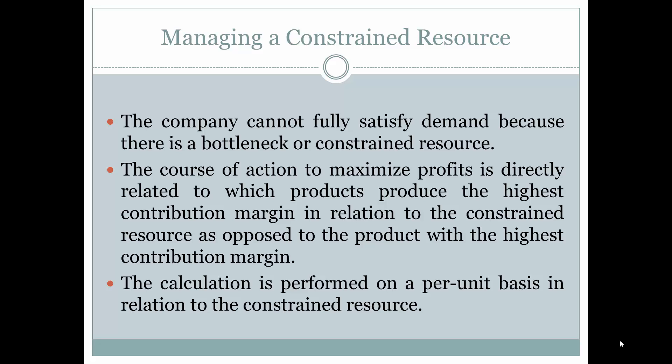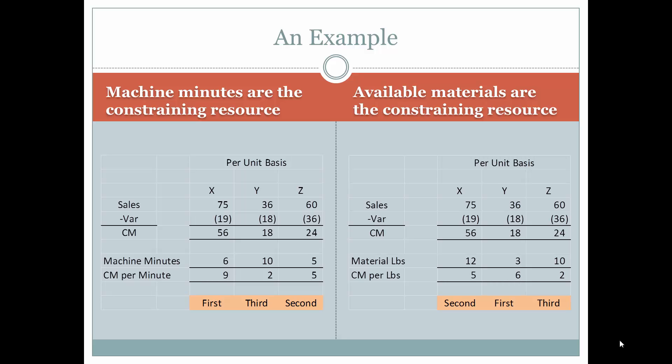So let's look at two examples. Machine minutes are the constraining resource. So we have these products X, Y, and Z. We have their sales and we have their variable expenses and therefore we have their contribution margin.